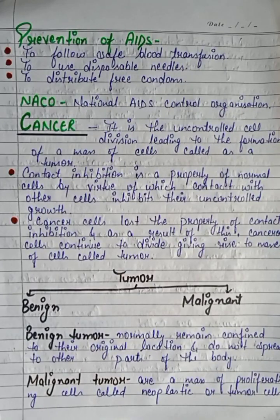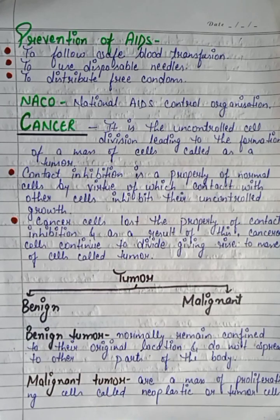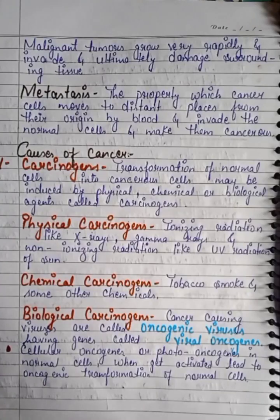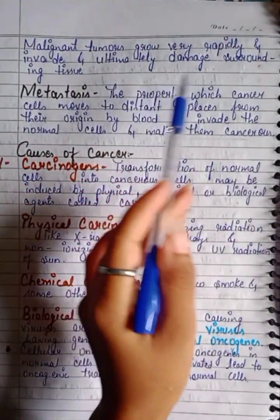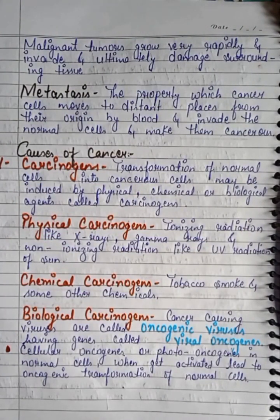Tumors are of two types: benign tumors and malignant tumors. Benign tumors normally remain confined to their original location and do not spread to other parts of the body. Malignant tumors are masses of rapidly proliferating neoplastic tumor cells. The malignant tumor grows very rapidly and invades and ultimately damages surrounding tissue.